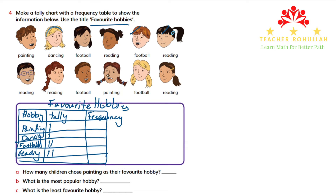We have reading appearing again and again — that makes four readings. Then we have football, then painting again, then football again, and one more reading. So our four hobbies are painting, dancing, football, and reading.